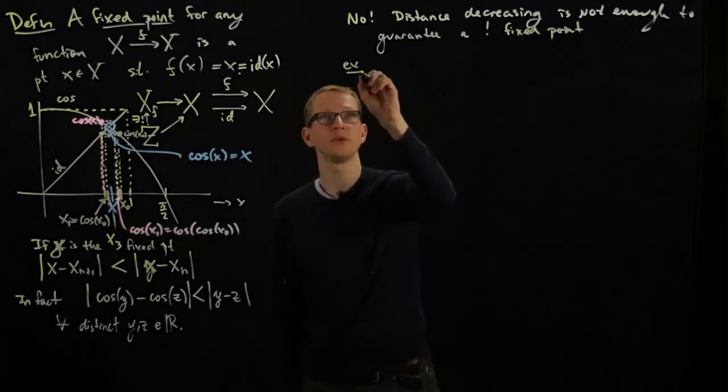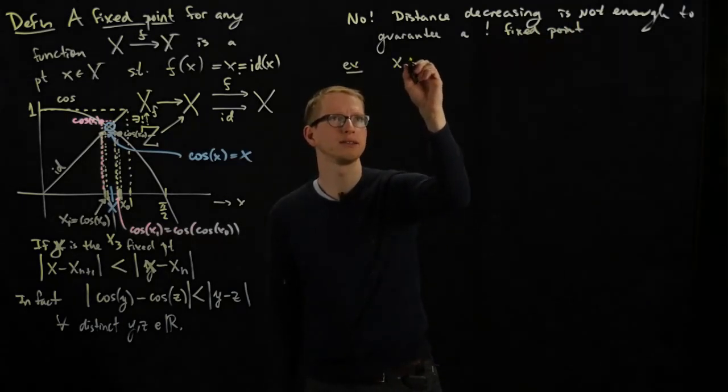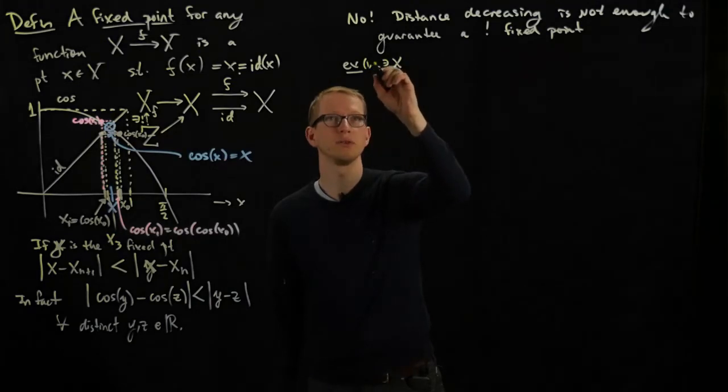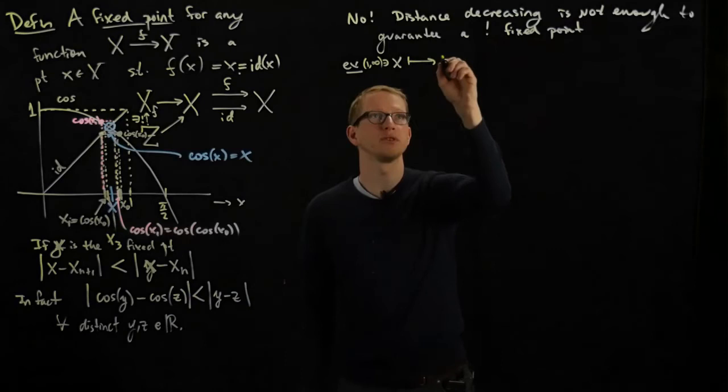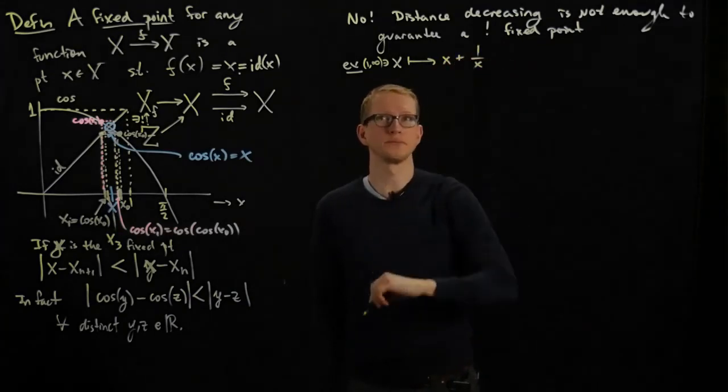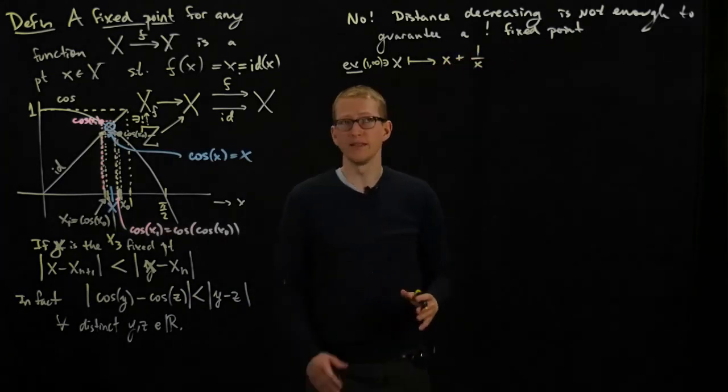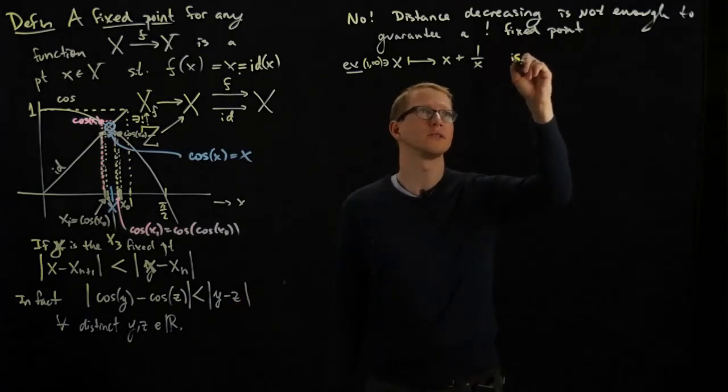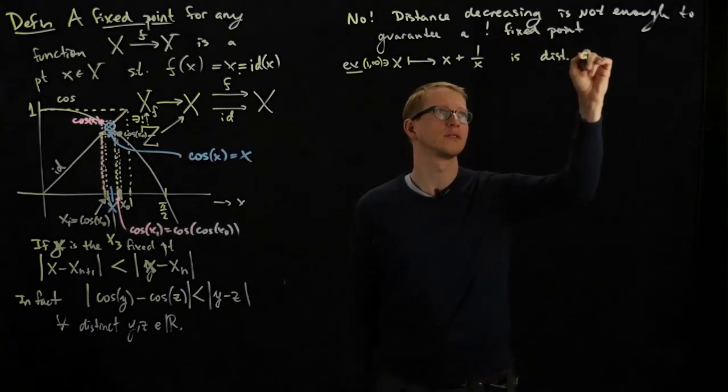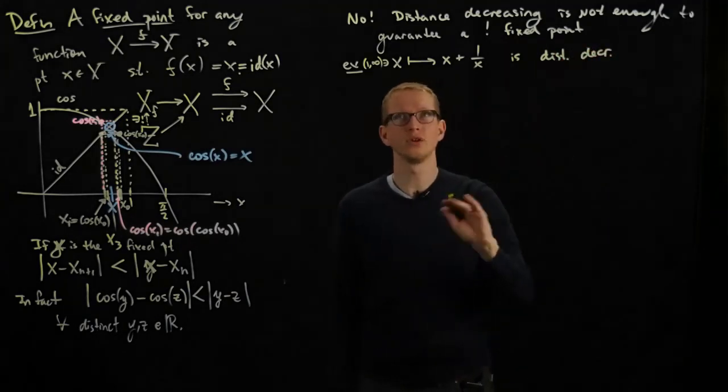Distance decreasing is not enough to guarantee a unique fixed point. For example, the function that takes x, and let's say x is on the open interval (1, infinity), maps it to x + 1/x. And this function, you can show, satisfies this condition, is distance decreasing, but has no fixed point.